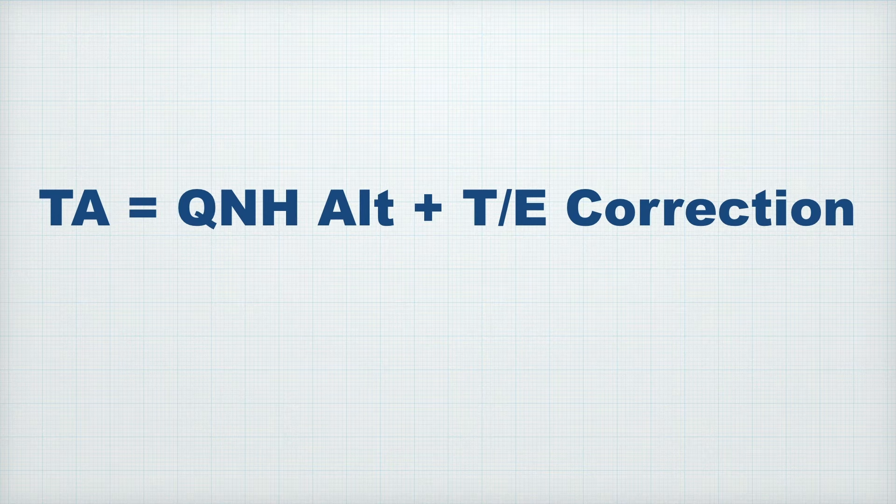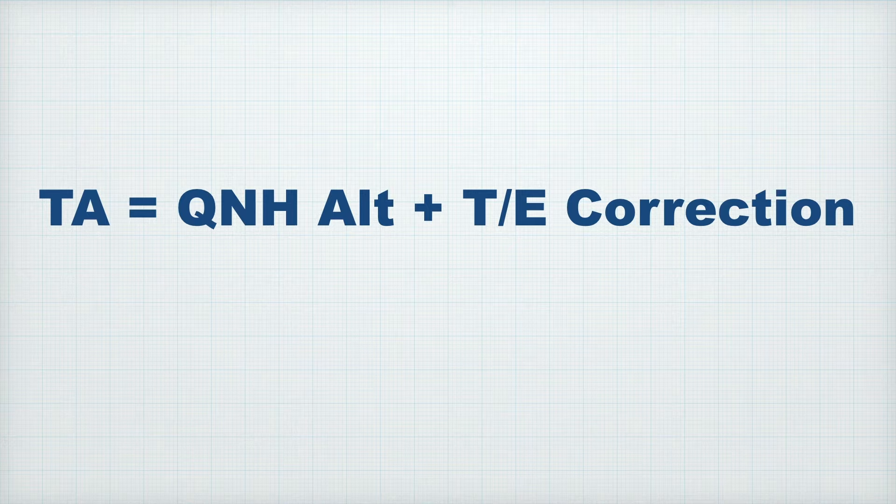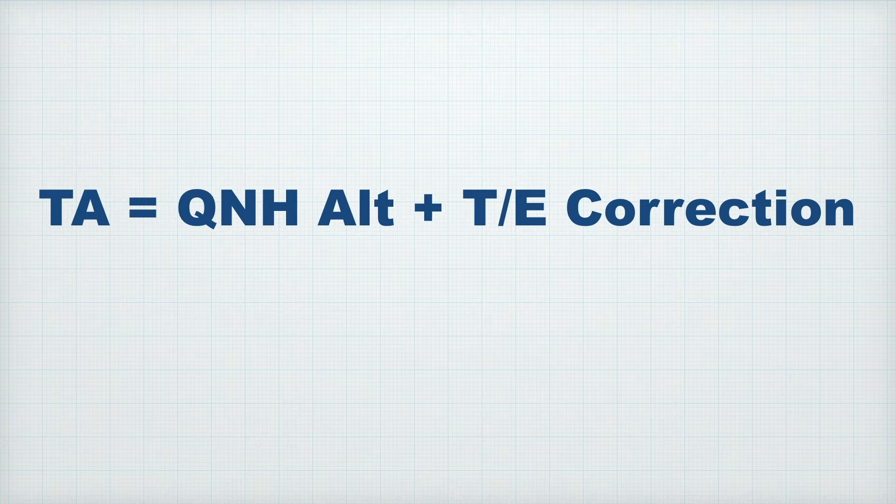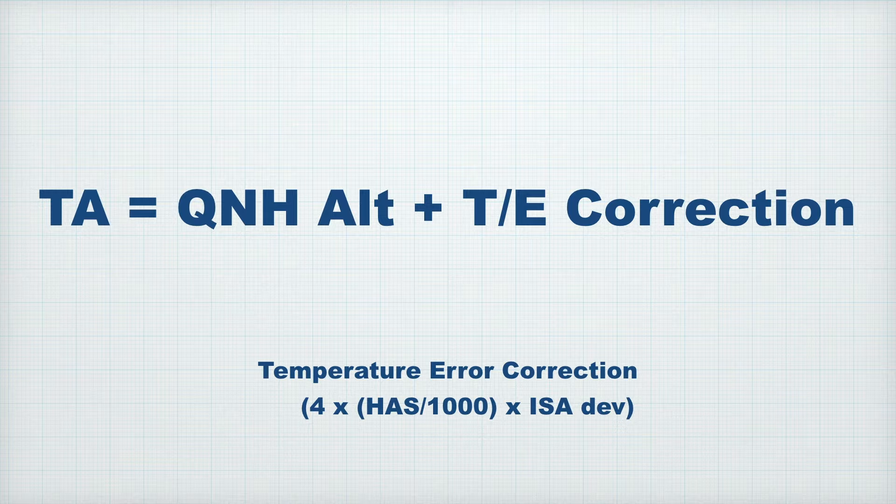So here's a formula for true altitude. True altitude is equal to your indicated altitude, based on your QNH, plus or minus a correction for temperature error. We've just seen that a formula for temperature error correction is 4 times height above surface (HAS) divided by 1000 times your ISA deviation.